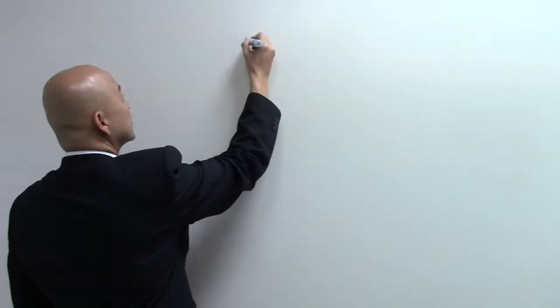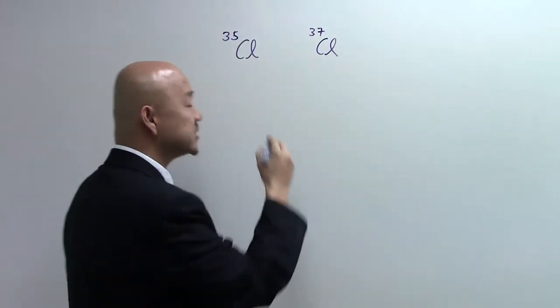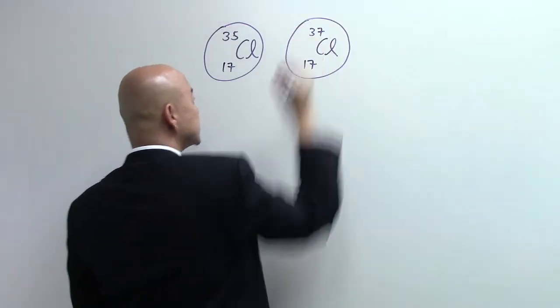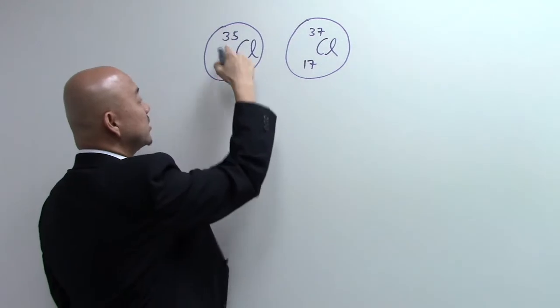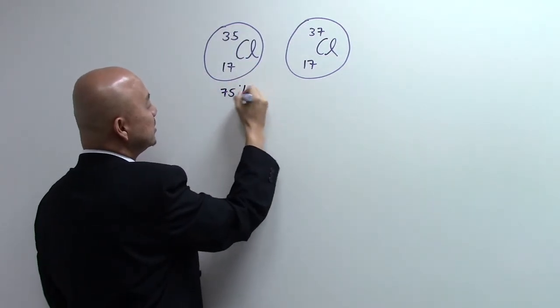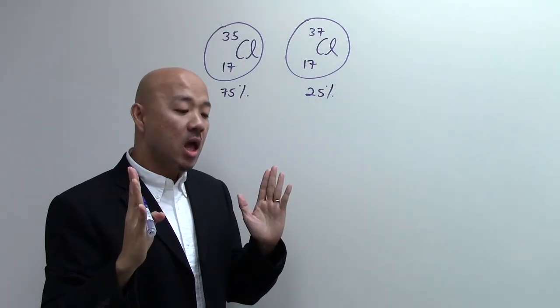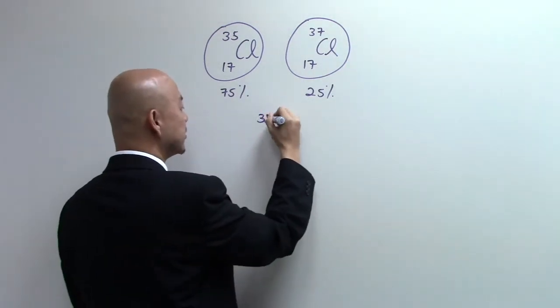The next example we can look at is chlorine, a very important element to discuss. Chlorine is known to exist in two isotopes with mass number 35 and 37. So one is 35 and the other one is 37. Chlorine has a proton or atomic number of 17. These two isotopes of chlorine have been found to have a percentage abundance of 75% and 25%. If you look at the periodic table, chlorine has a relative atomic mass of 35.5.